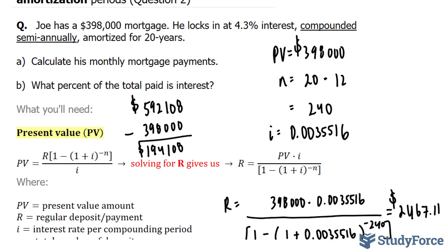So let's just interpret what this number means. That means that he will be paying $194,000 of interest within that 20-year period. What is the percentage of this from 592,108?